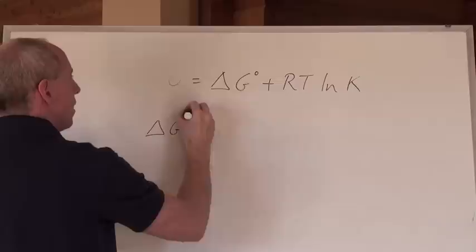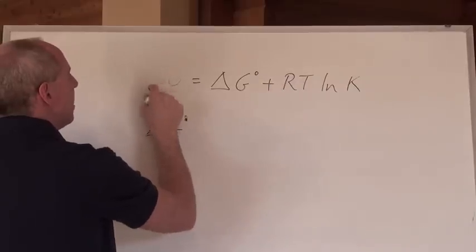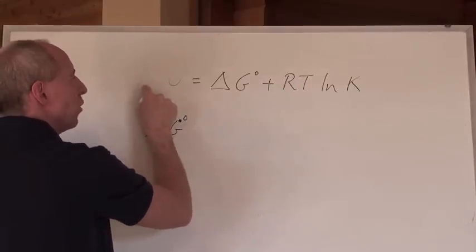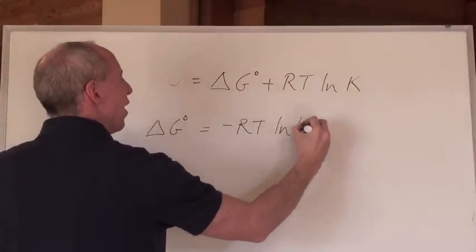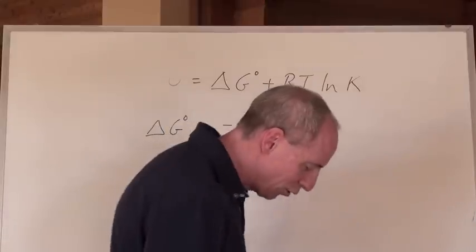ΔG° - take that ΔG°, put it over to the other side, then we make it negative ΔG°. Let's put the negative to the other side, and it equals -RT ln K. That's another cool formula.